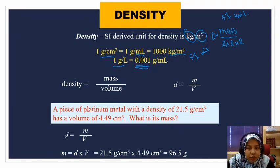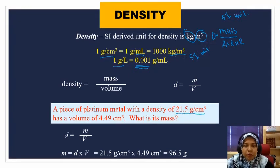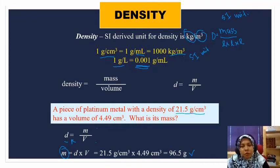Now let's try an exercise. A piece of platinum has density 21.5 gram per centimeter cubic - this is the common unit used in chemistry. It has a volume of 4.49 centimeter cubic. What is its mass? This is a basic, straightforward equation. You can simply put it into the equation: density equals mass over volume. To get mass, bring it up, so density times volume gives you mass. So 21.5 gram per centimeter cubic times 4.49 centimeter cubic.